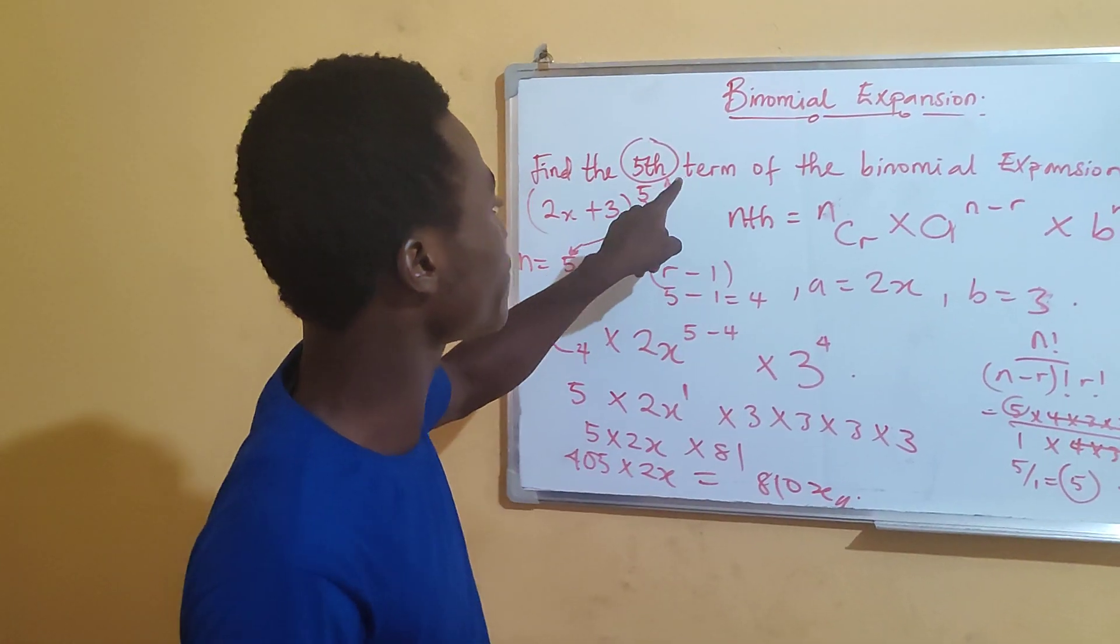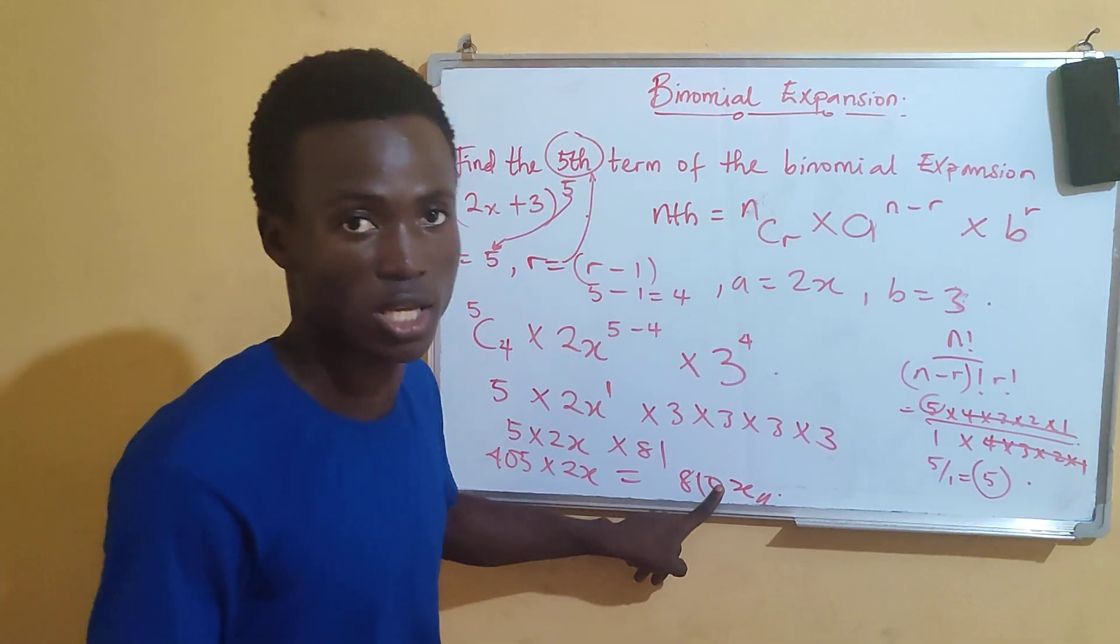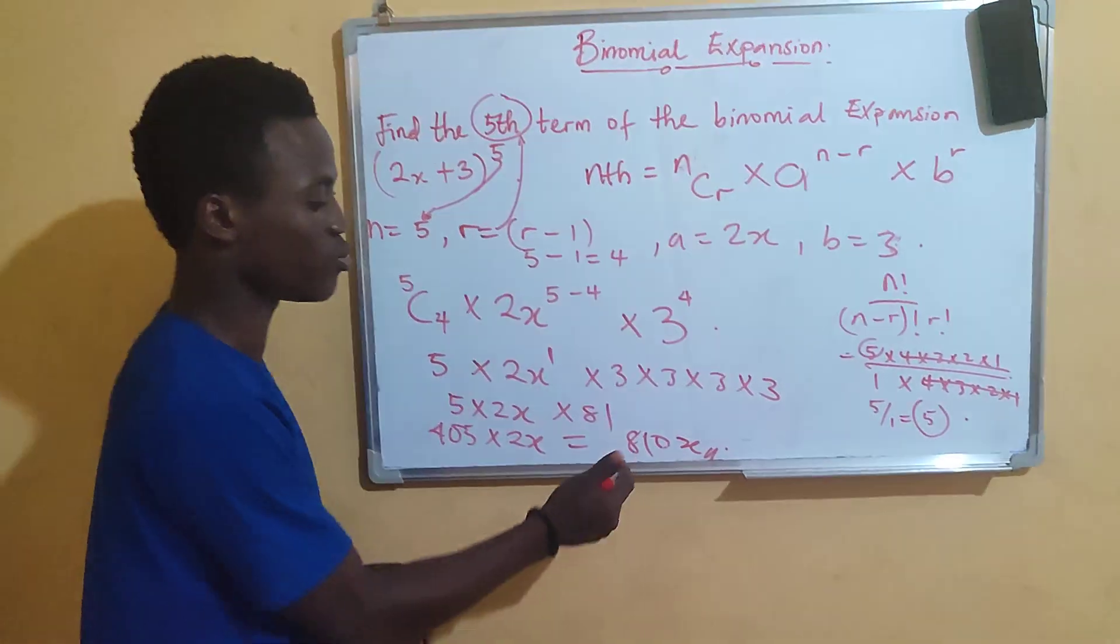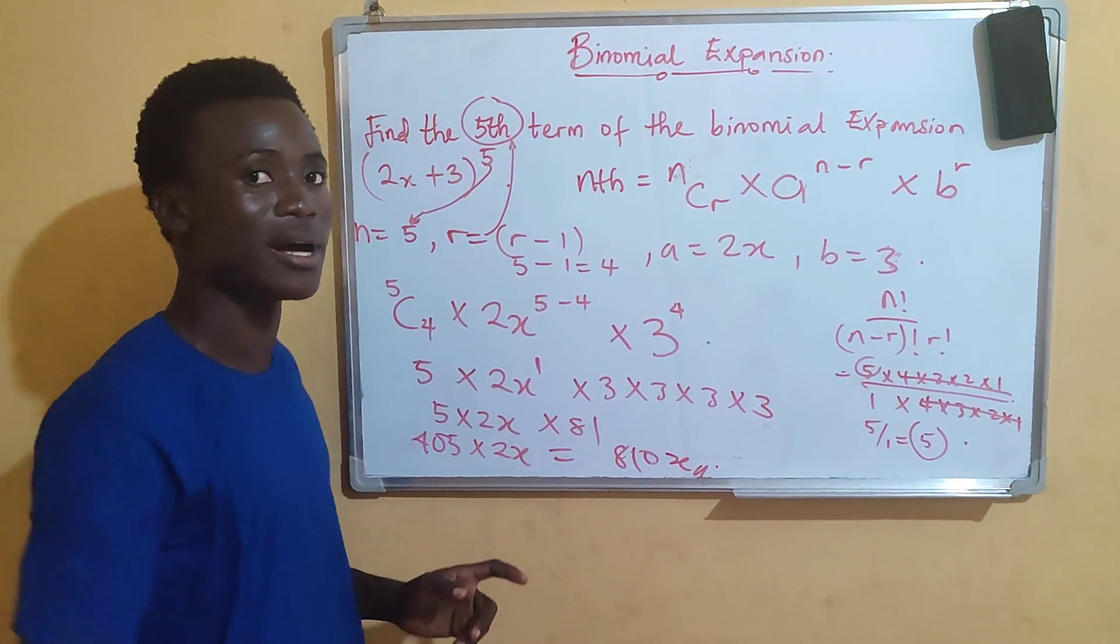From this now, the fifth term of this expansion is 810x. And if you use Pascal triangle also, if you solve it very well, you must definitely get the same answer.